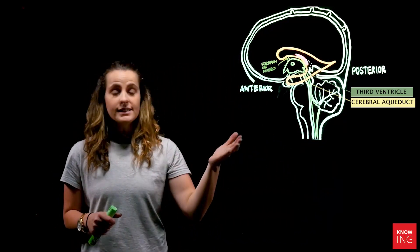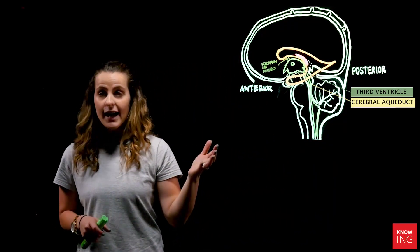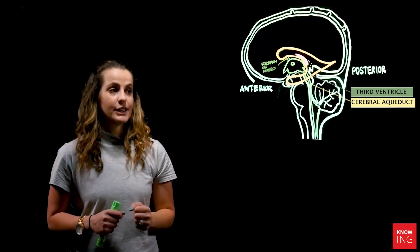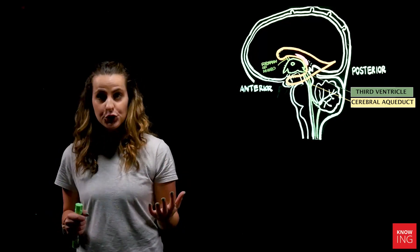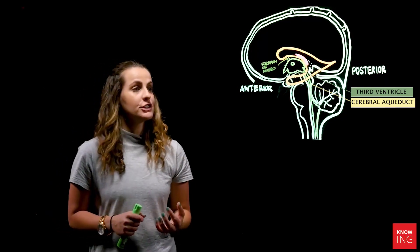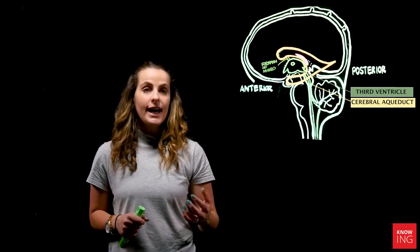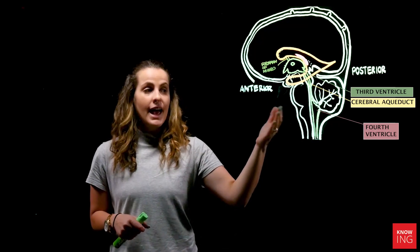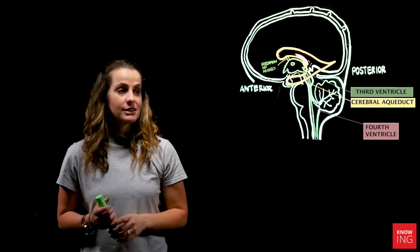From the cerebral aqueduct, CSF then passes into the fourth ventricle, which is located between the cerebellum and the pons.